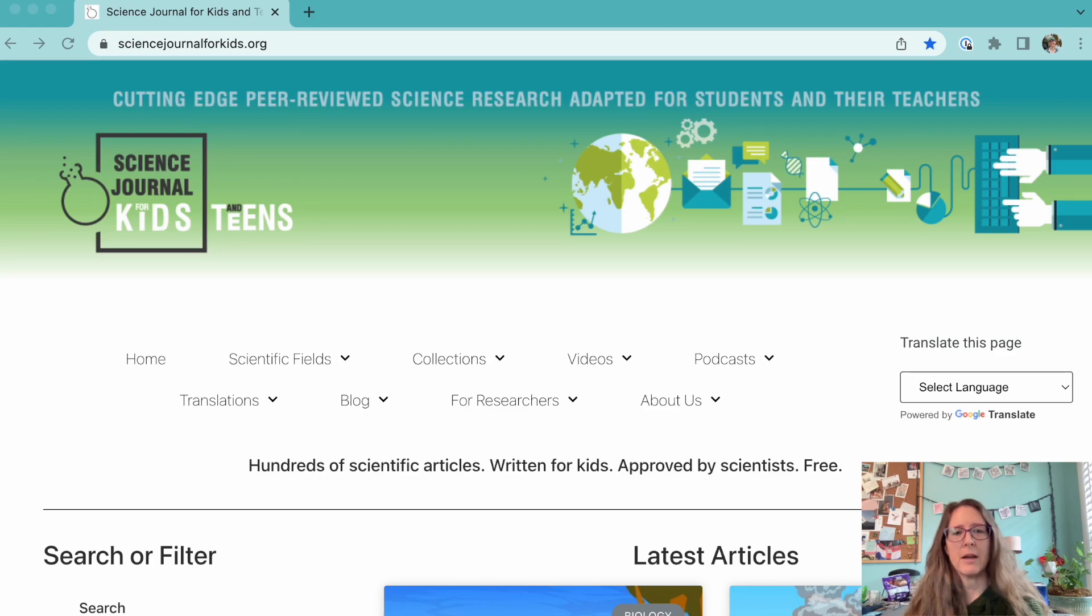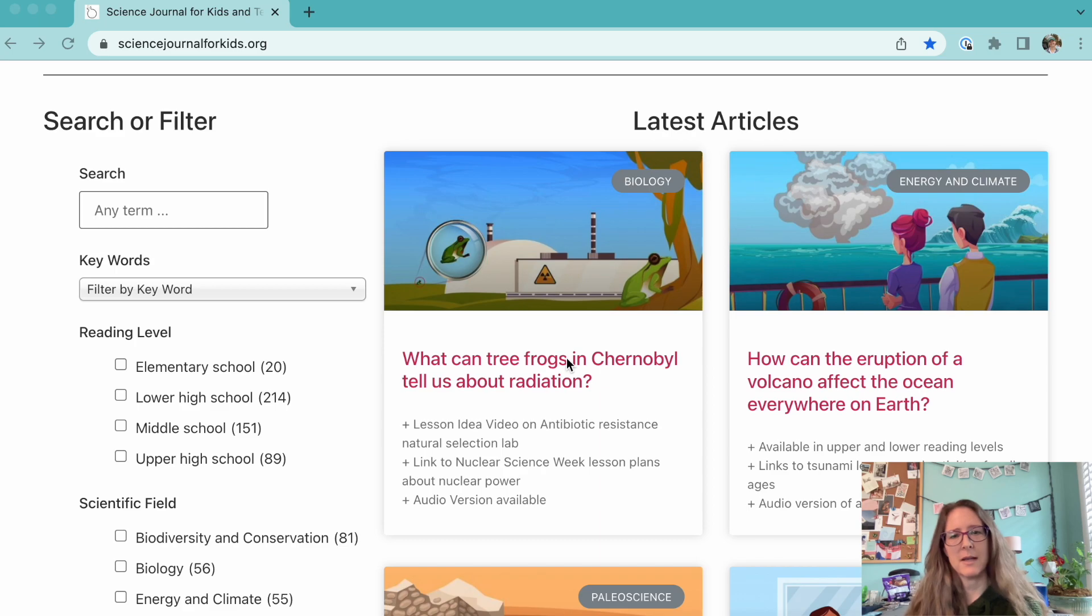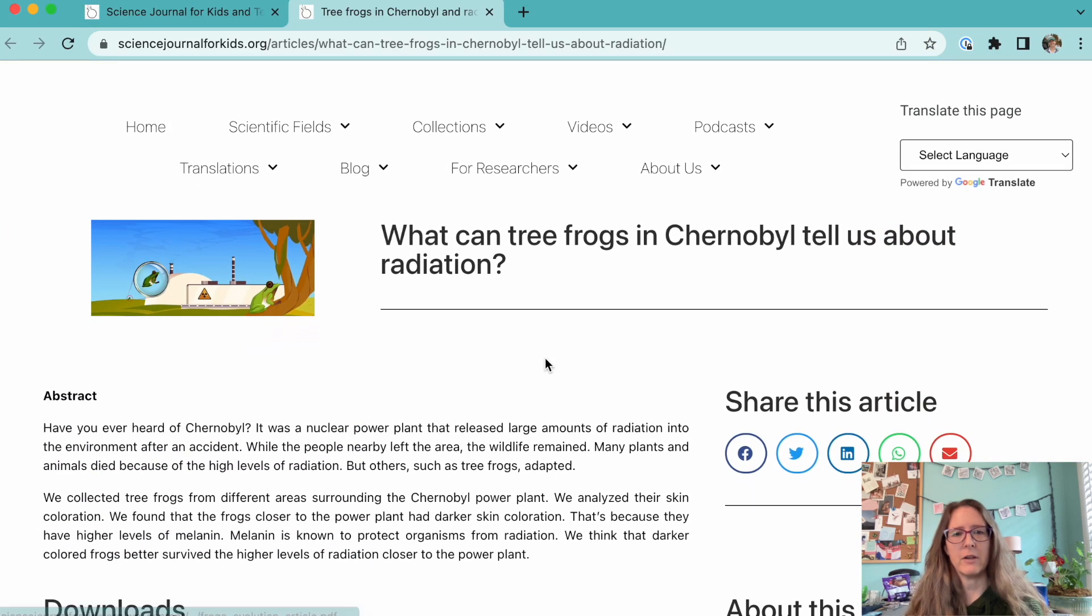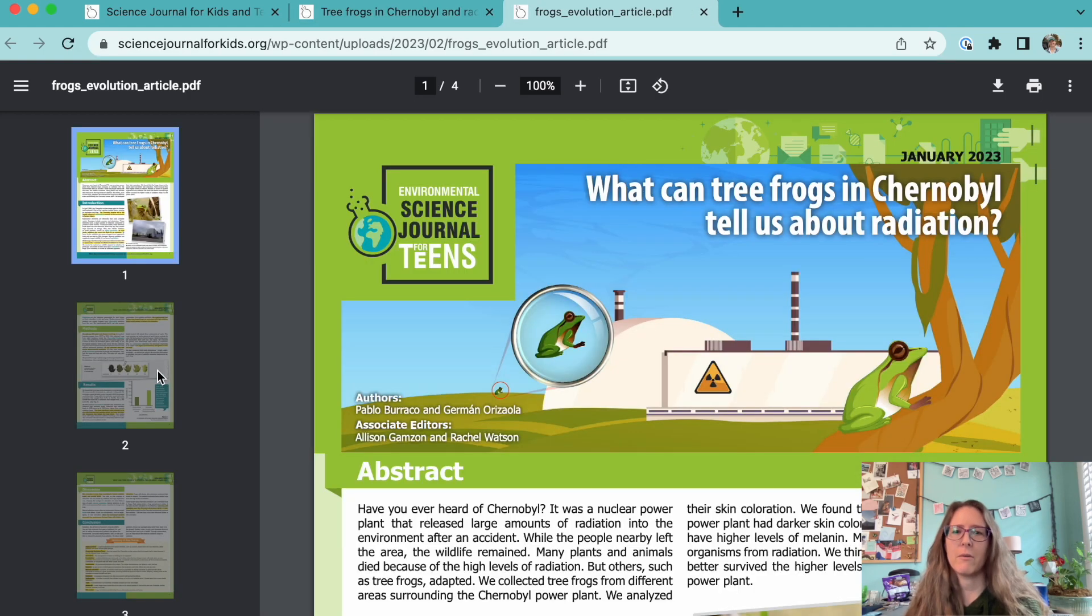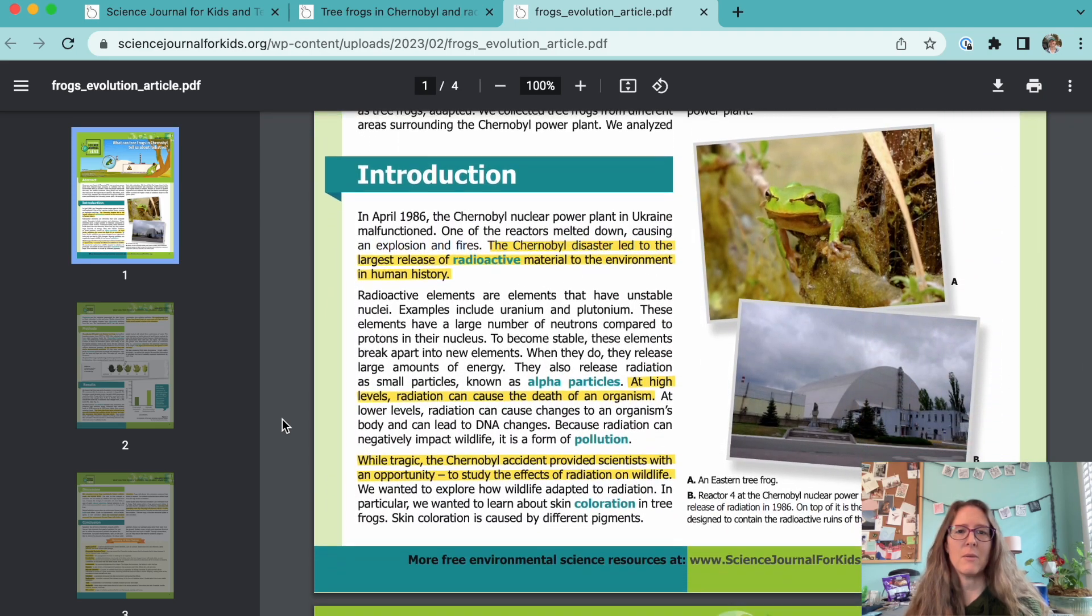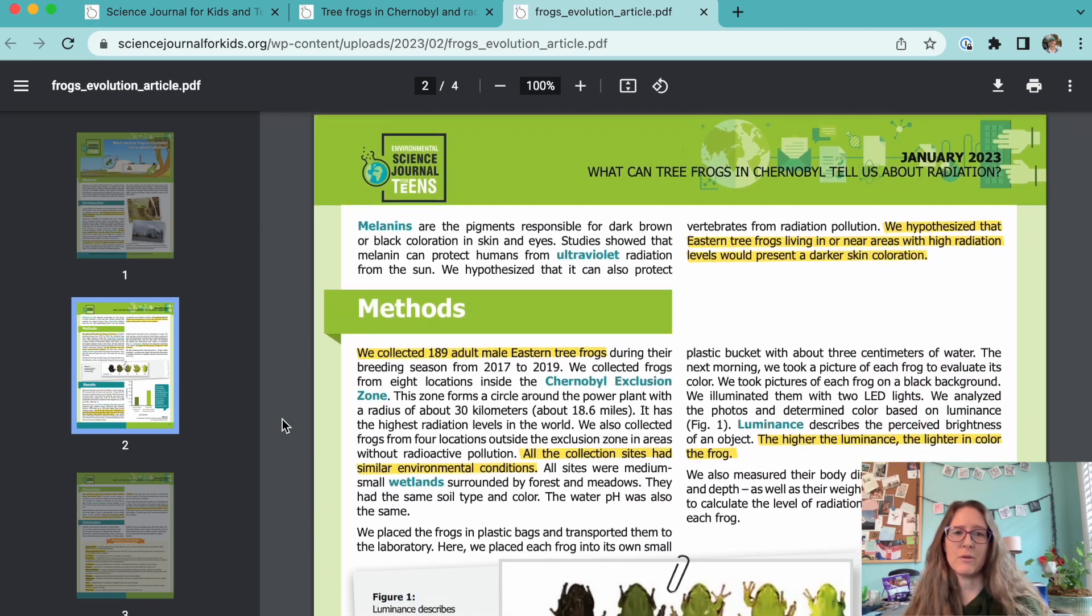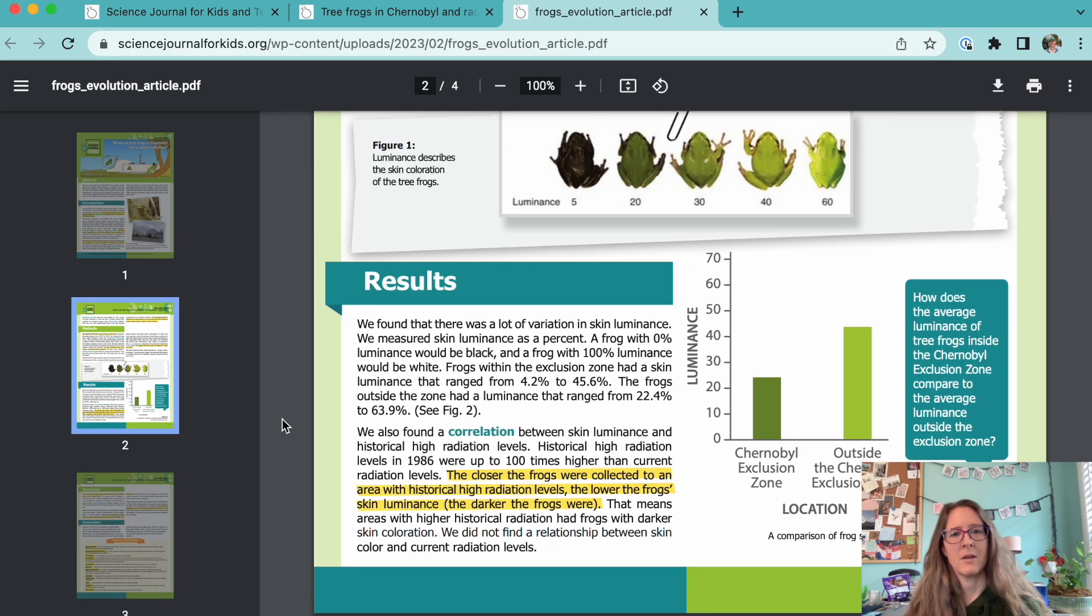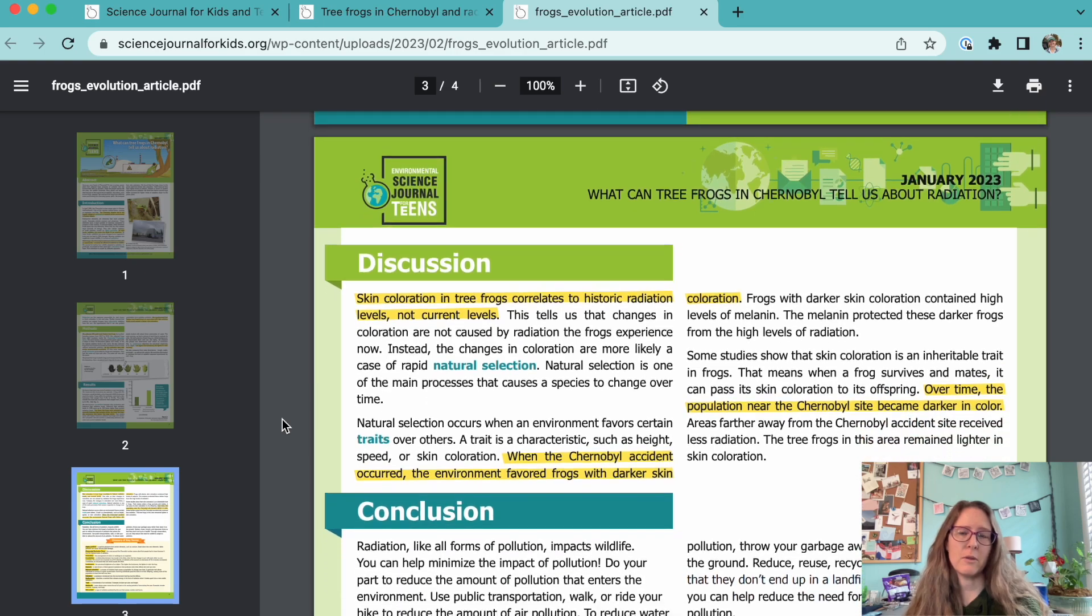This activity would go great along with our article titled What Can Tree Frogs in Chernobyl Tell Us About Radiation? Researchers found that tree frogs living closer to the Chernobyl power plant had darker skin coloration than those living farther away. They think this might be because melanin in their skin might protect them from radiation. These were the frogs that could reproduce and eventually the whole population of tree frogs near the power plant were darker. This is a great real world example of natural selection to share with your students.